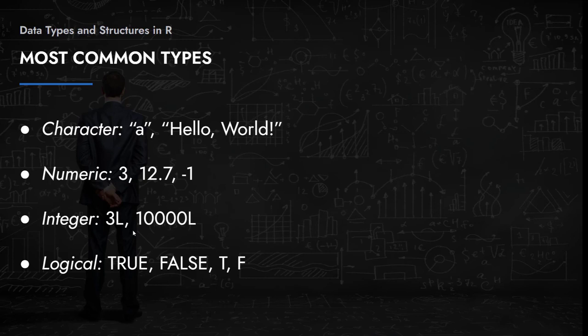The last common data type is the logical data type — the true or false data type. This also has many analogs in other programming languages. In R, you must use capital letters: TRUE or FALSE. There is also a shorthand using capital T for true and capital F for false.